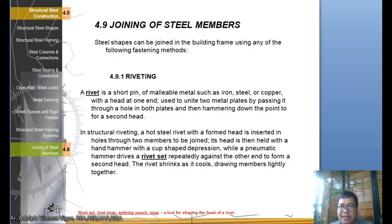Let's go to the joining of steel members. Steel shapes can be joined in the building frame using any of the following fastening methods. First is riveting. A rivet is a short pin of malleable metal such as iron, steel, or copper with a head at one end, used to unite two metal plates by passing it through a hole in both plates, then hammering down the point to form a second head. In structural riveting, a hot steel rivet with a formed head is inserted in the holes through two members to be joined. Its head is then held with a hand hammer with a cup-shaped depression, while a pneumatic hammer drives a rivet set repeatedly against the other end to form a second head. The rivet shrinks as it cools, drawing members tightly together.